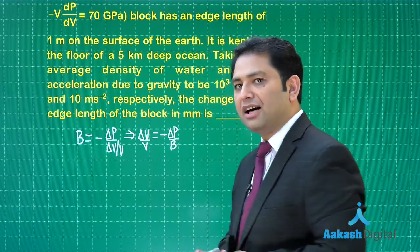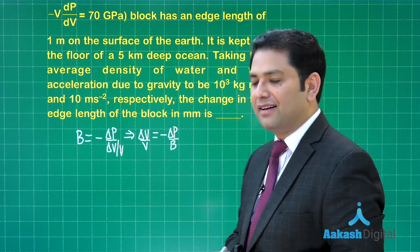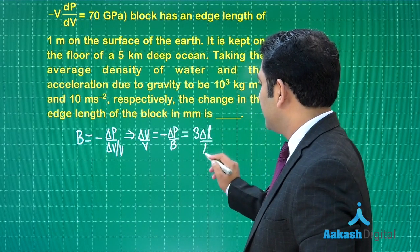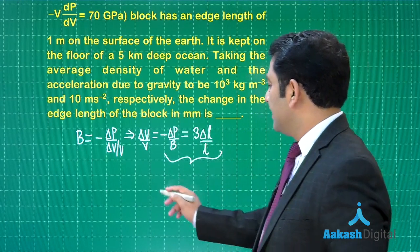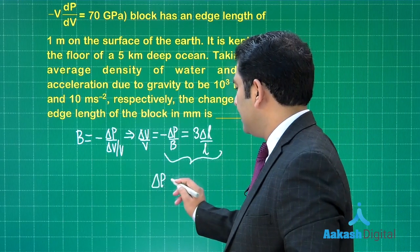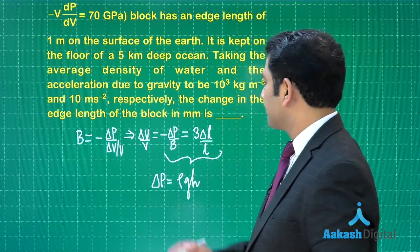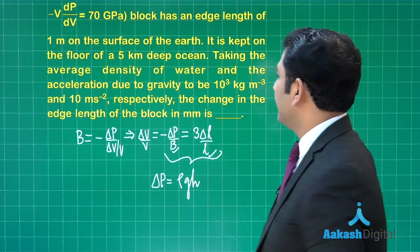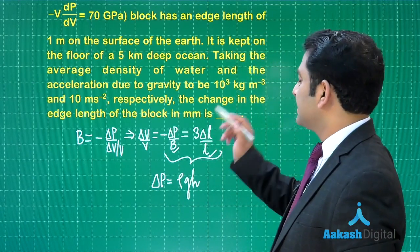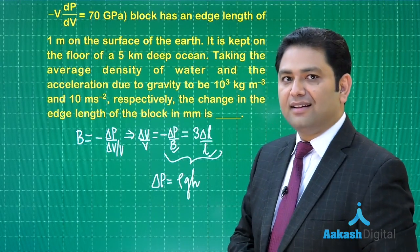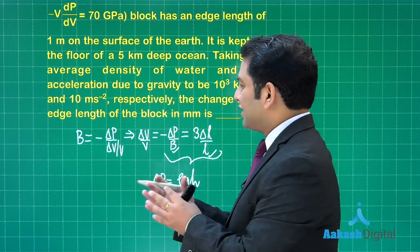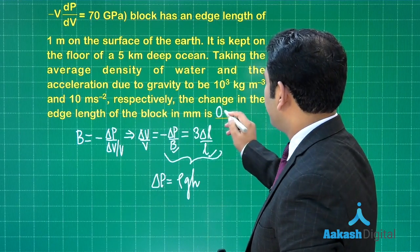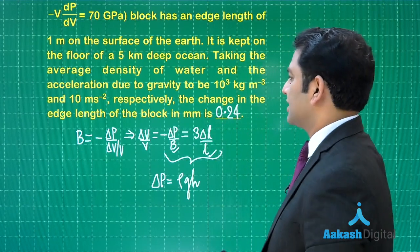And further, delta v by v is 3 delta l by l. So this is also equals to 3 delta l by l. Now if you focus here, the value of delta p is rho gh. That is known, bulk modulus is known, length is also given, the edge length 1 meter. So you can easily calculate the value of delta l. It comes in negative and we need to find the change in the edge length, so the answer that you would be reporting would be 0.24.